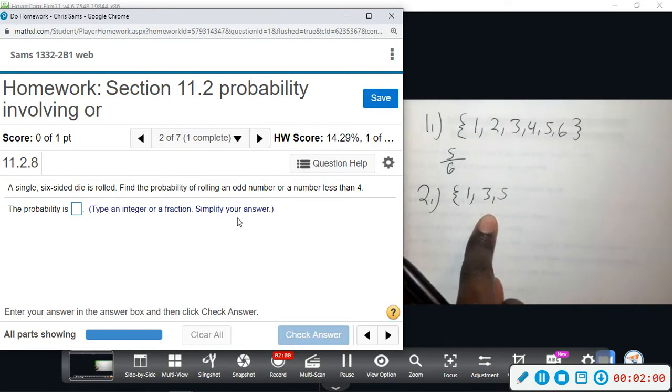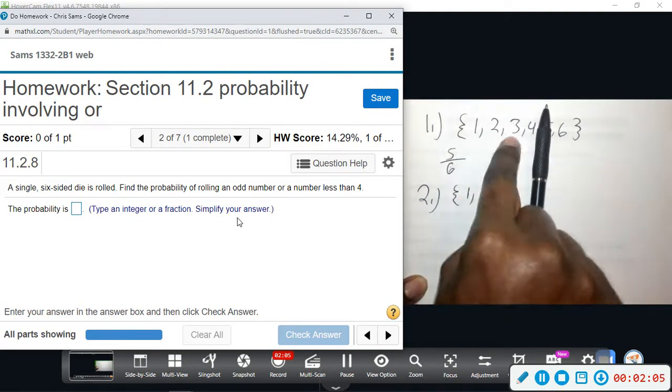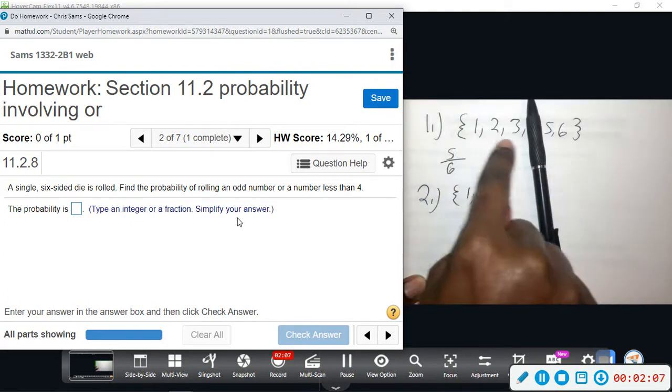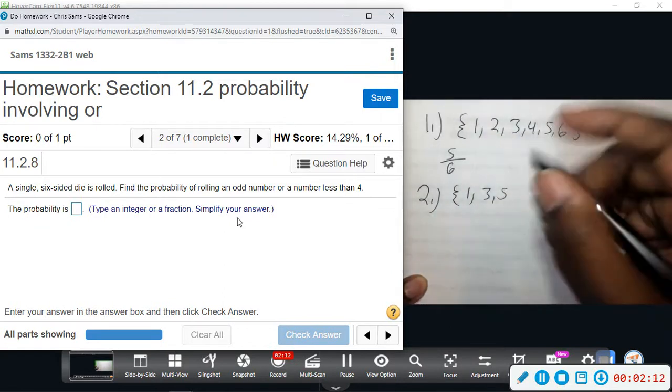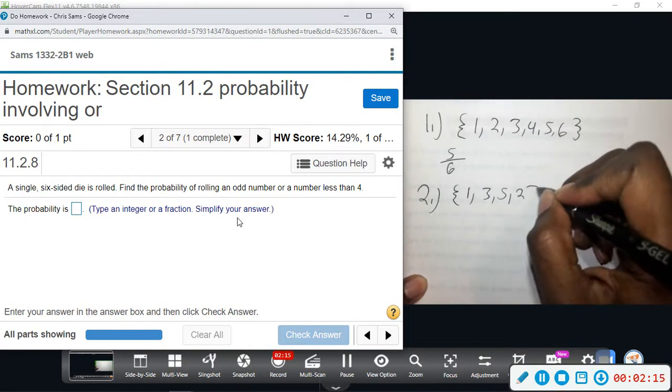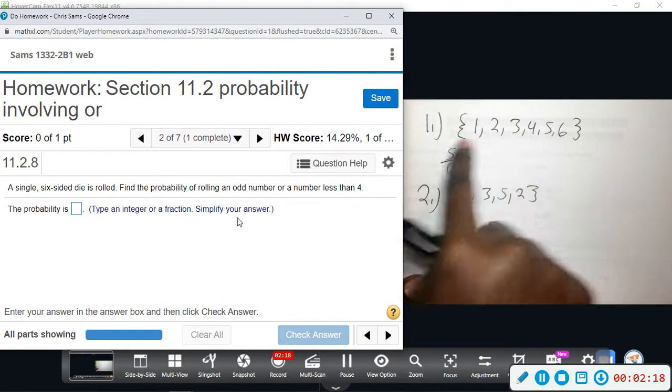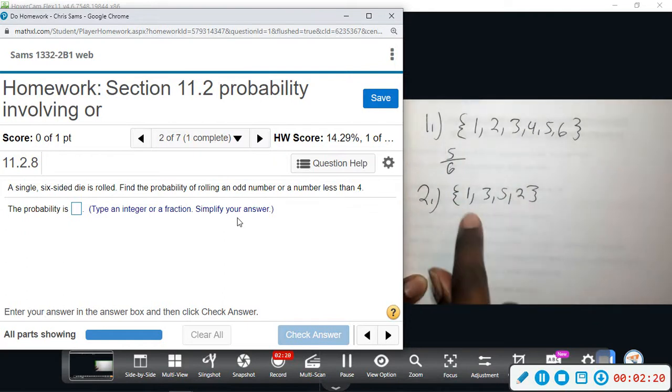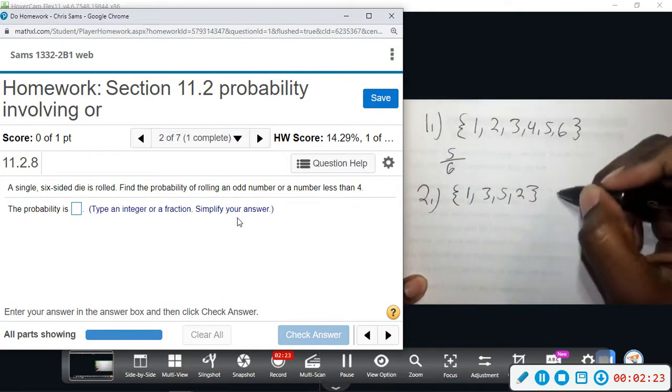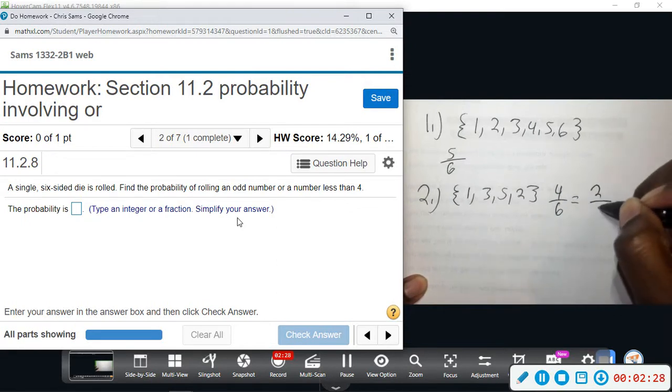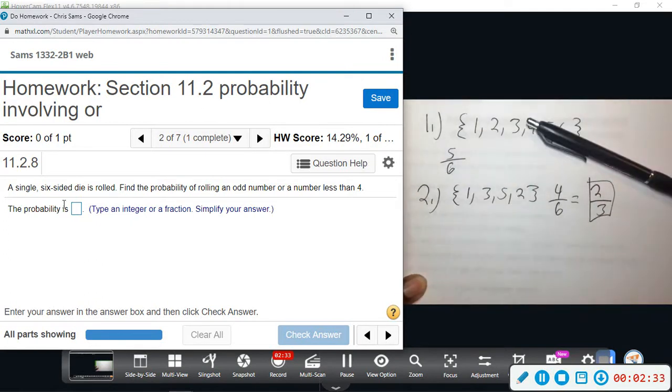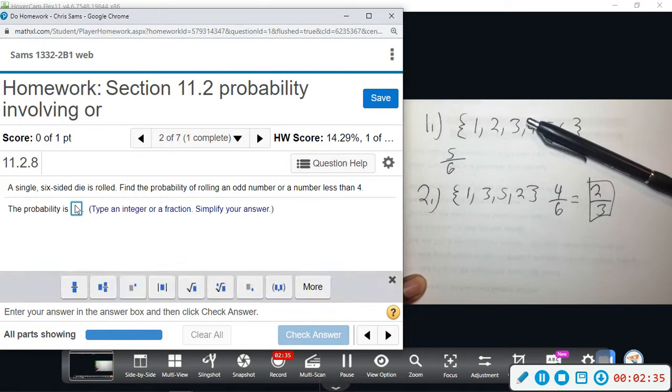Or a number less than 4. The numbers less than 4 would be 1, 2, and 3. We've already accumulated 1 and 3, so I don't need to repeat them. I just need to add the number 2. Adding 2 to the mix gives me odd number or number less than 4. All together there are 4 out of 6, which can be reduced to 2/3. Two out of three would be the probability of odd or less than 4.